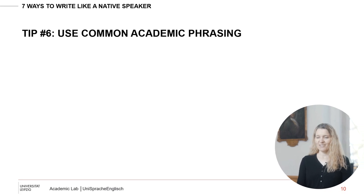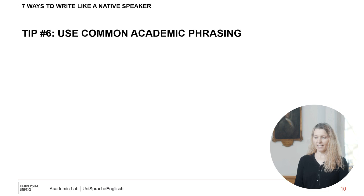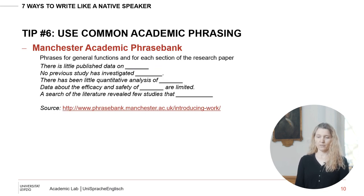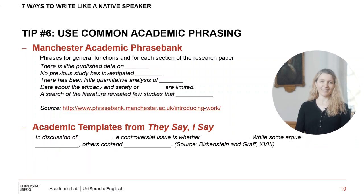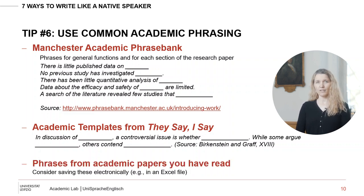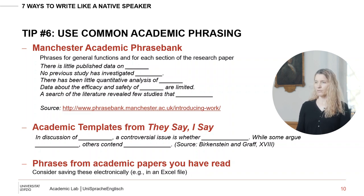Tip number six: use frequent constructions — common academic phrasing. A great resource is the Manchester Academic Phrase Bank, which has phrases for general functions as well as for each section of a research paper. As long as the information you put in the blanks is your own, it's not plagiarism, because these phrases have been used millions of times. A similar phrase bank comes from 'They Say, I Say,' a book required at over half of US universities in English courses. The third approach is to collect phrases from the academic papers you're reading — consider making an Excel file to save useful, eloquent phrases.